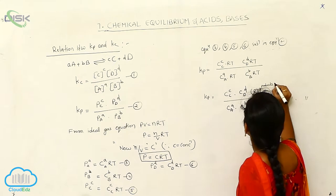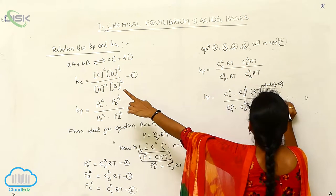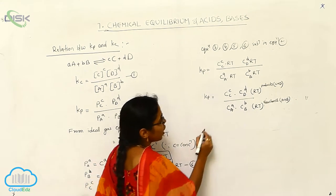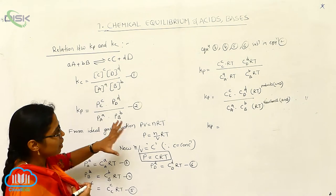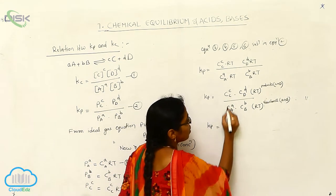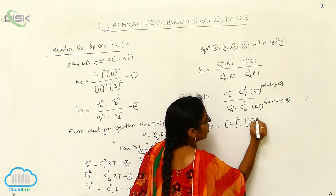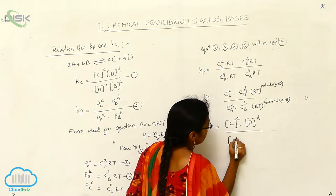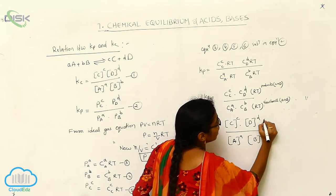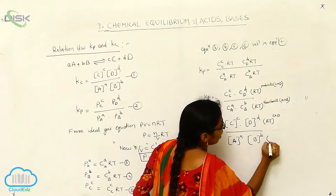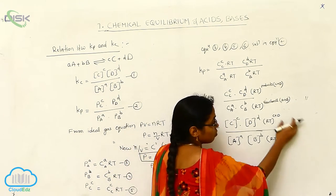Now, the R·T terms — which ones belong to the products? These R·T terms belong to the products. And which R·T terms belong to the reactants? Products are C plus D, and reactants are A plus B. So we can write the concentration C in square bracket notation: [C]^c · [D]^d divided by [A]^a · [B]^b, and here should be R·T to the power of C plus D, and R·T to the power of A plus B.